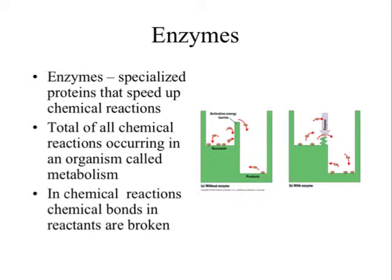Enzymes are specialized proteins that speed up chemical reactions. All enzymes are proteins, but not all proteins are enzymes. These have a very special job of helping to speed up chemical reactions. In our body, we have tons of chemical reactions going on, and the total of all chemical reactions that occur inside an organism is what we call metabolism. If somebody says they have a high metabolism, they just have more chemical reactions going on that need energy. In these chemical reactions, chemical bonds are being broken and formed, and enzymes are responsible for helping that process take place.